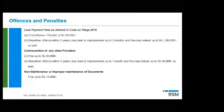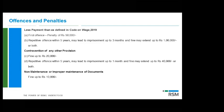Offenses and penalties: less payment than defined under the code — first offense carries a penalty of 50,000; repetitive offenses within five years may lead to imprisonment up to three months and fine extending to one lakh, or both. Contravention of any other provision: fine up to 20,000; repetitive offenses within five years could lead to imprisonment up to one month and fine of 40,000. Non-maintenance or improper maintenance of documents: fine of 10,000 rupees.